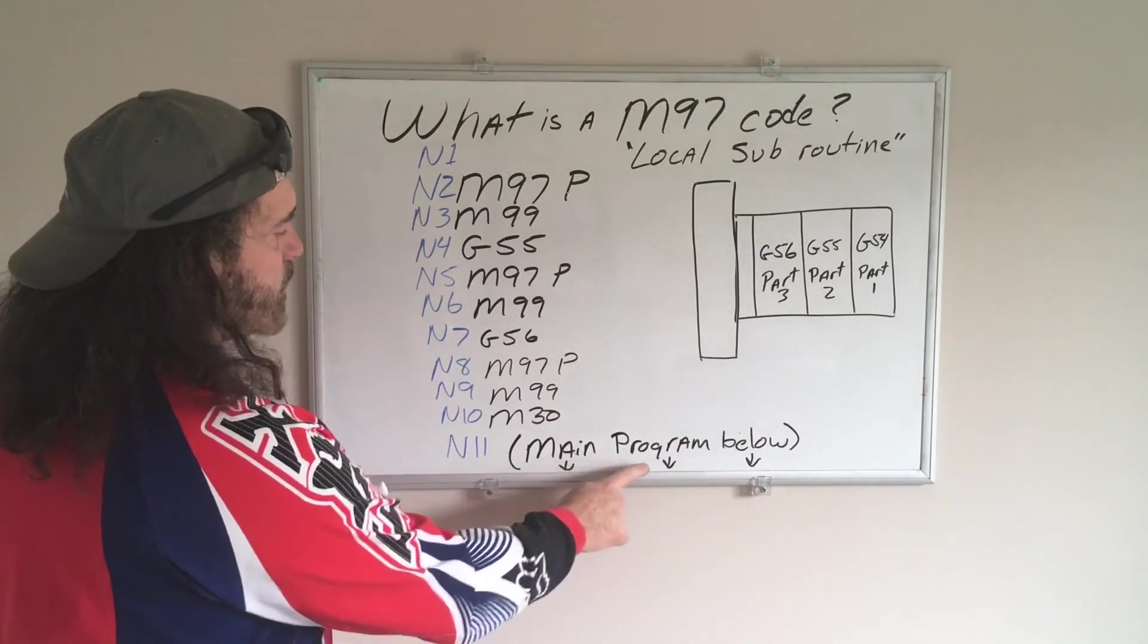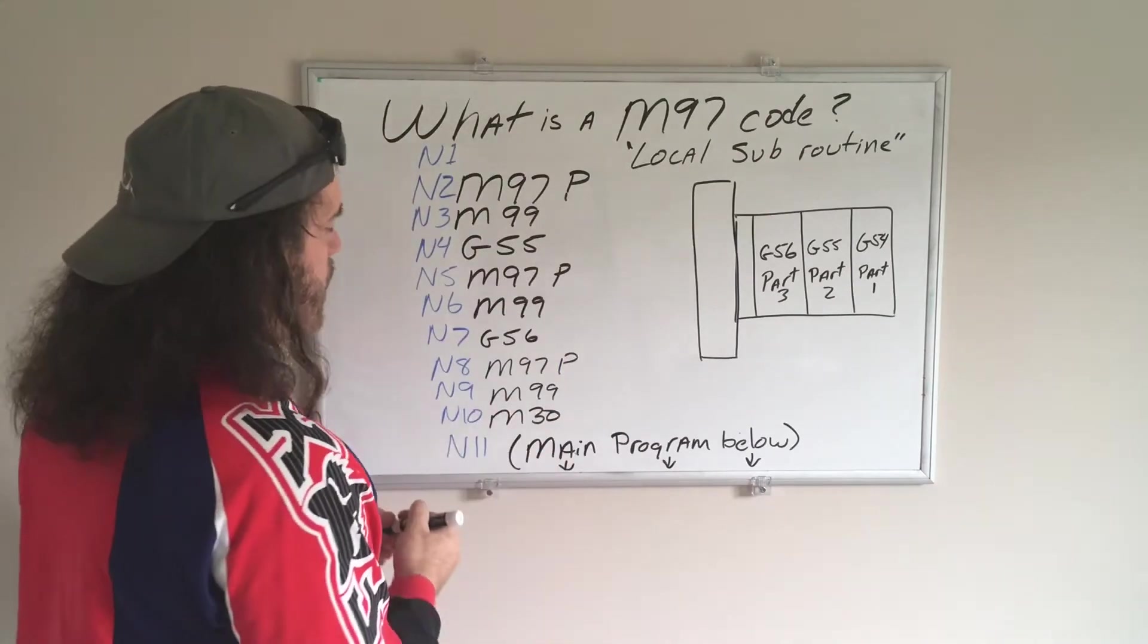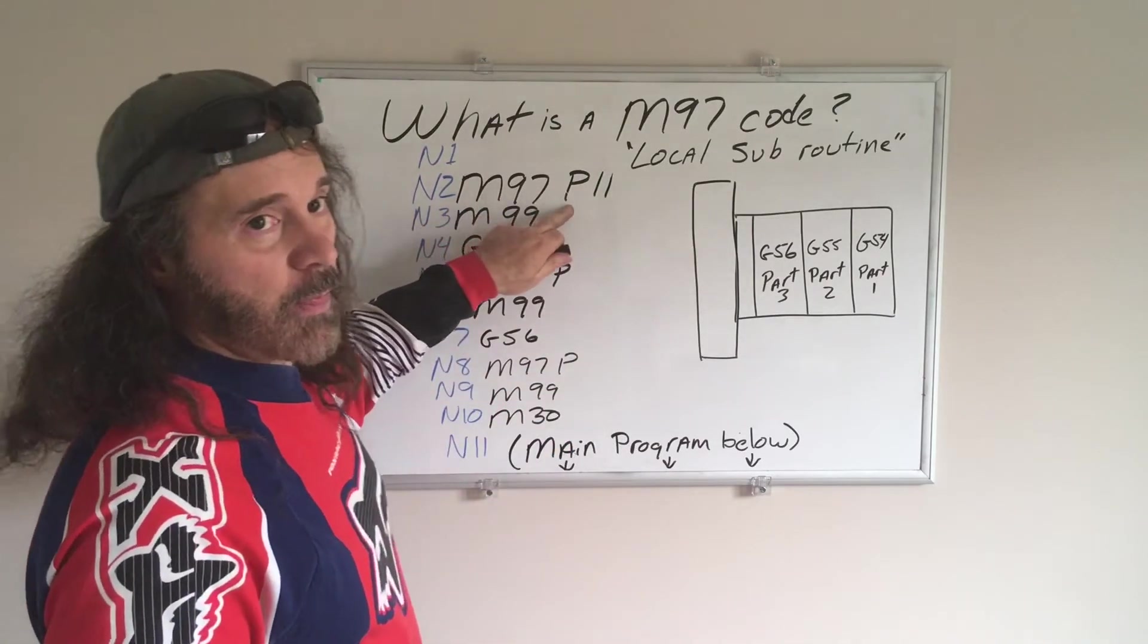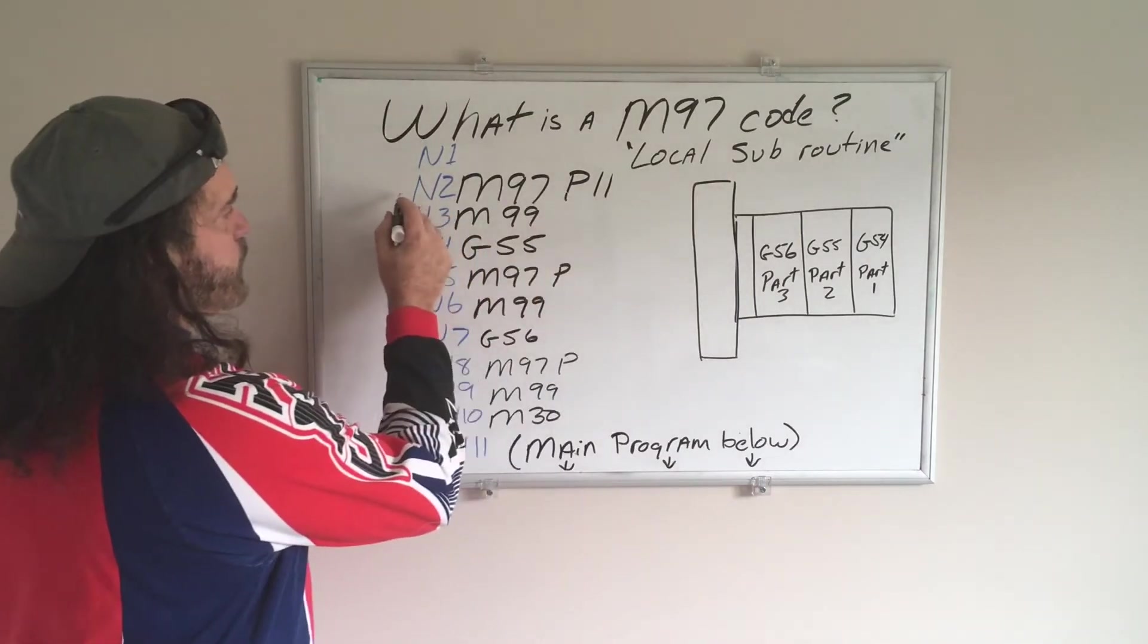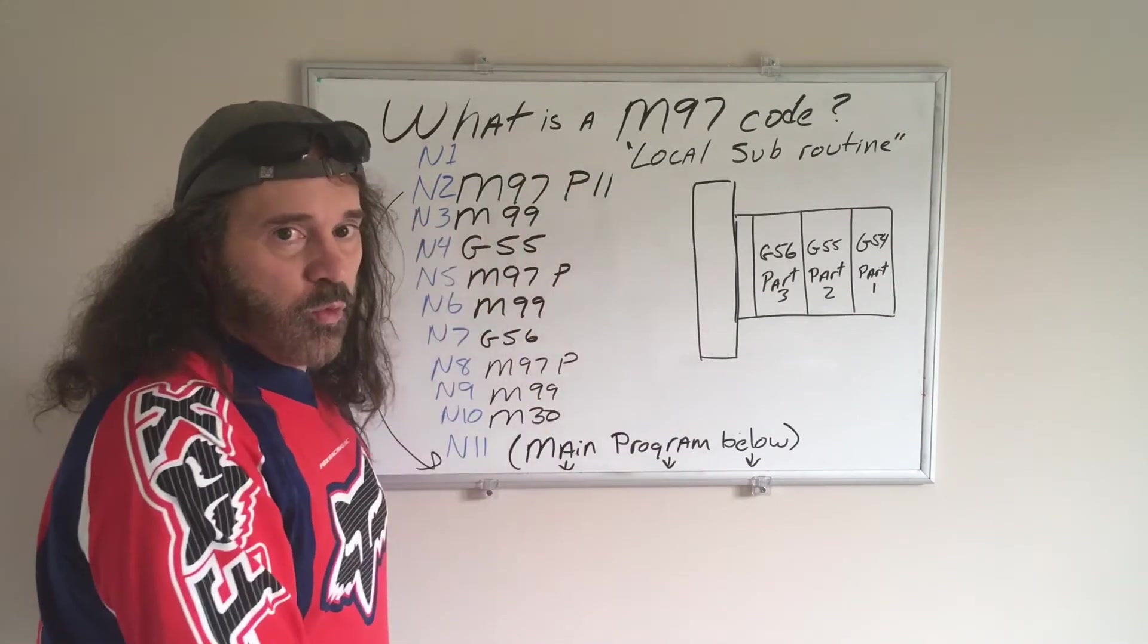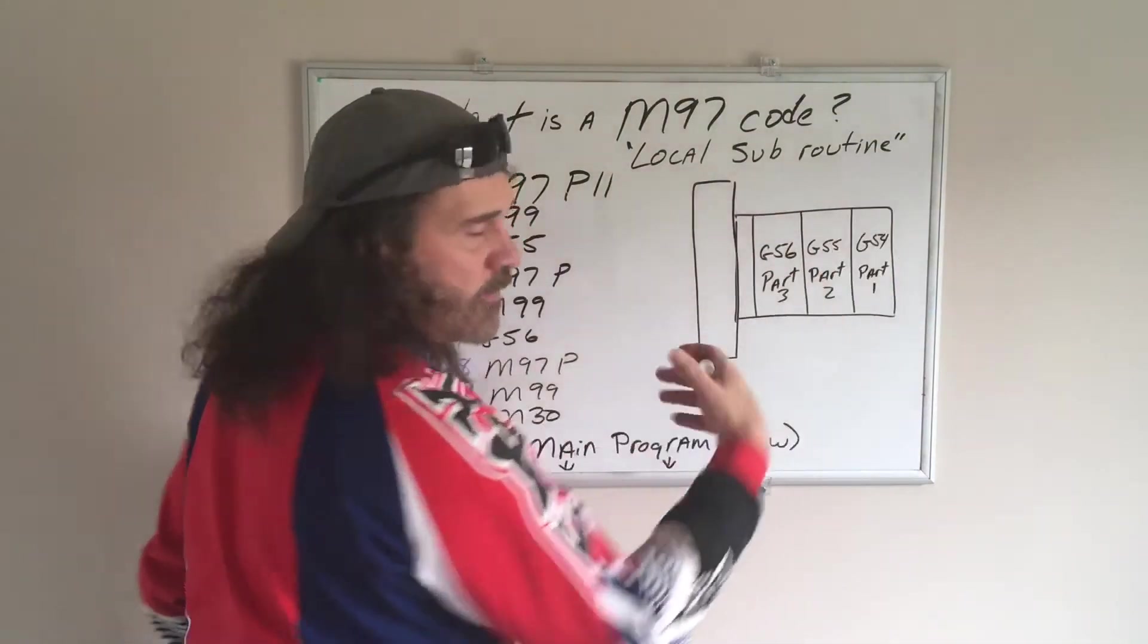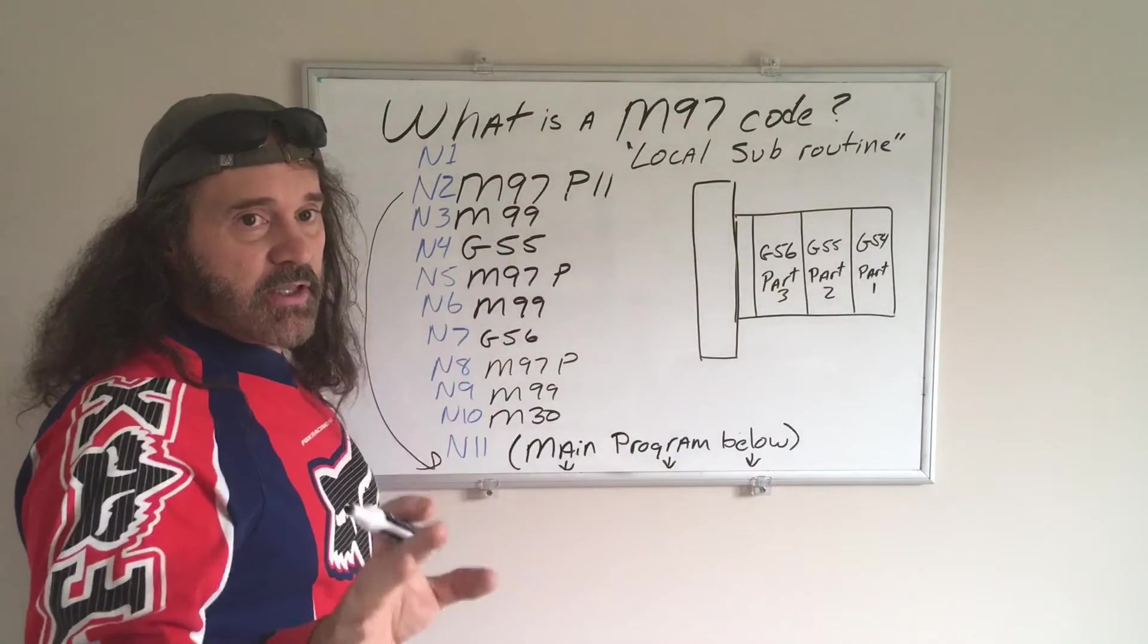So I wanted to jump down to the main program. My machine default is going to be in G54. So I'm going to tell it to jump to line 11, which is an M97 P11. It's going to jump down to that program, and then do everything you wrote, and all your facing, turning, drilling, whatever you're doing. And then it cuts off. That is now done.